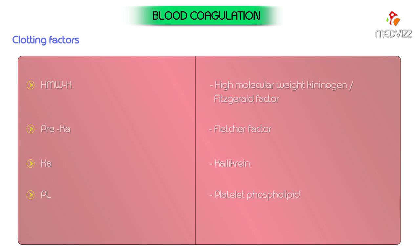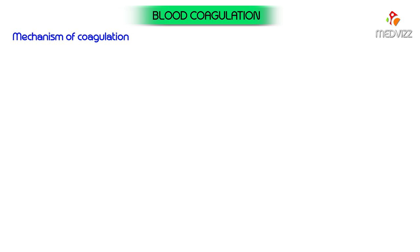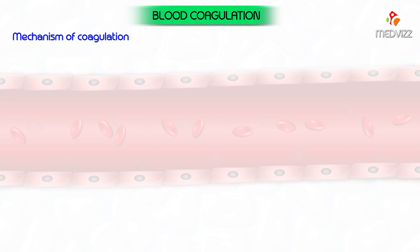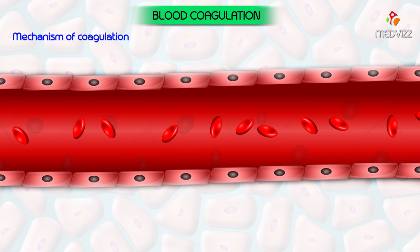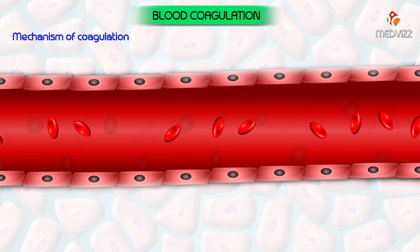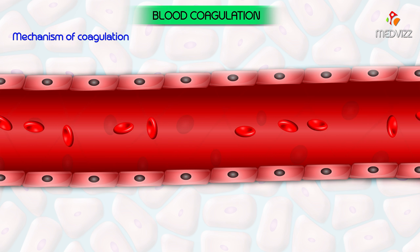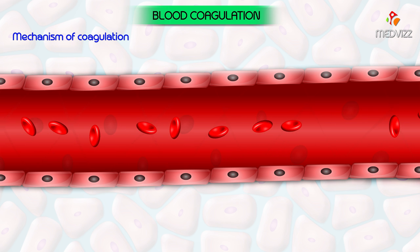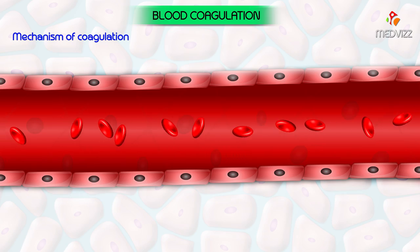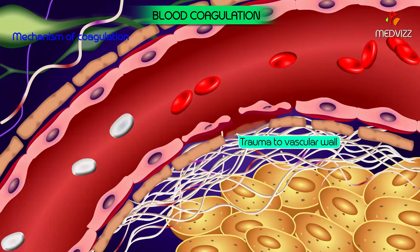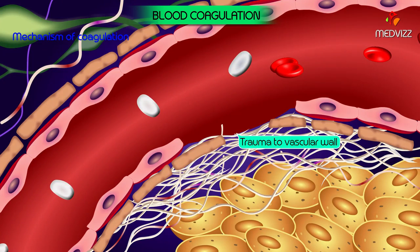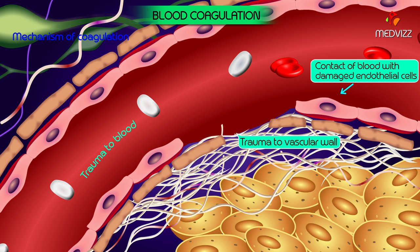Normally blood circulates in the blood vessels and does not clot spontaneously. Clot formation is initiated under the following situations: trauma to the vascular wall and adjacent tissues, trauma to the blood, and contact of blood with damaged endothelial cells, collagen, or other tissue elements outside the vessel.